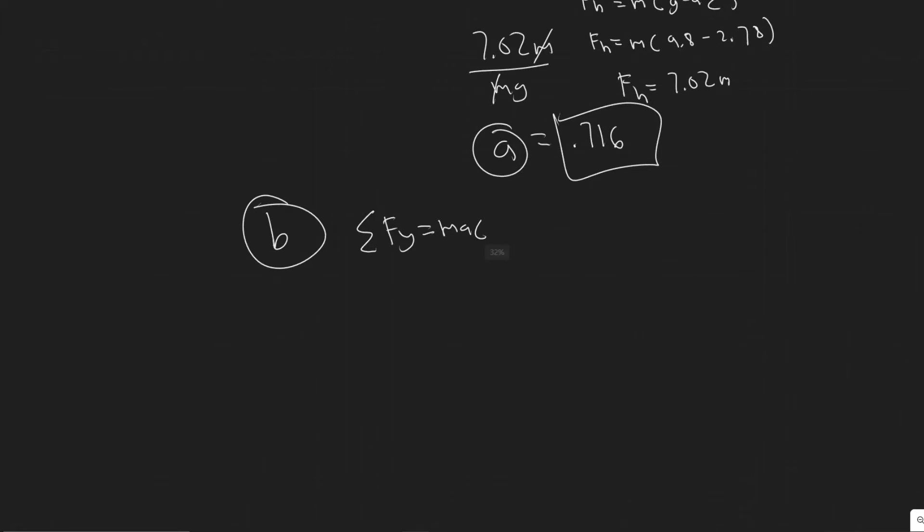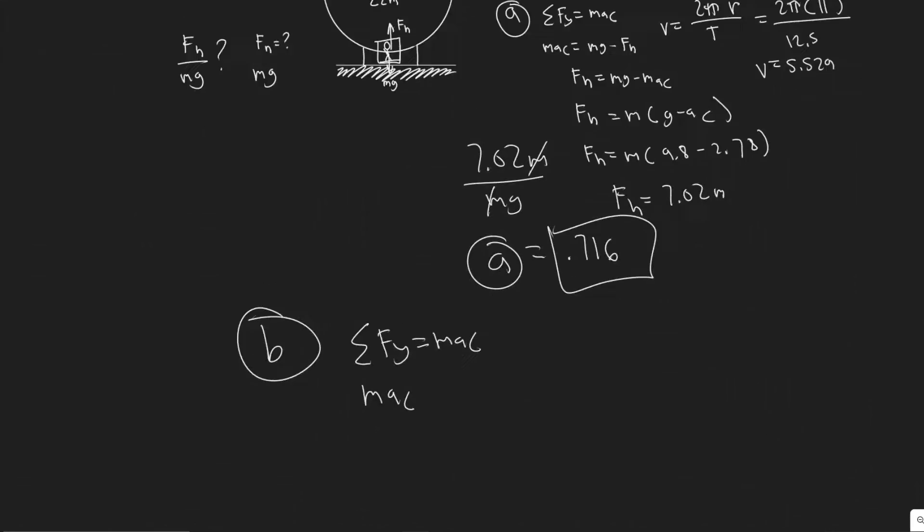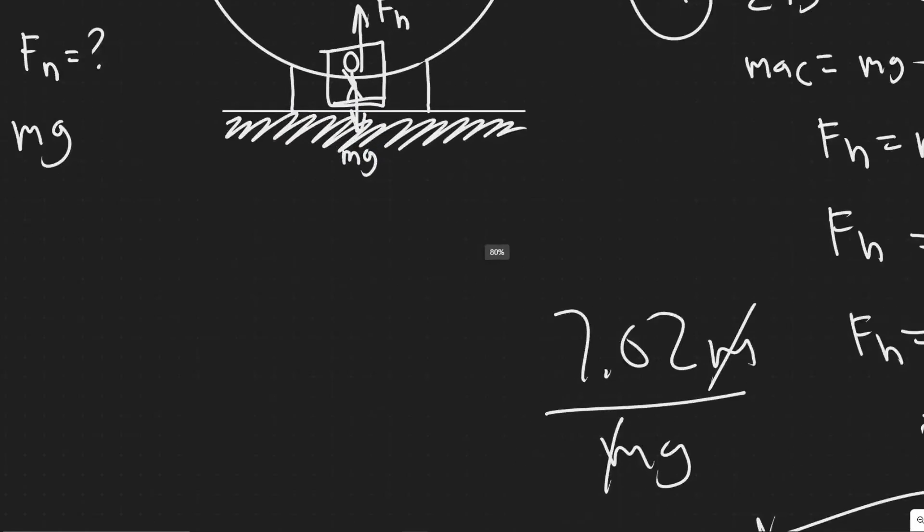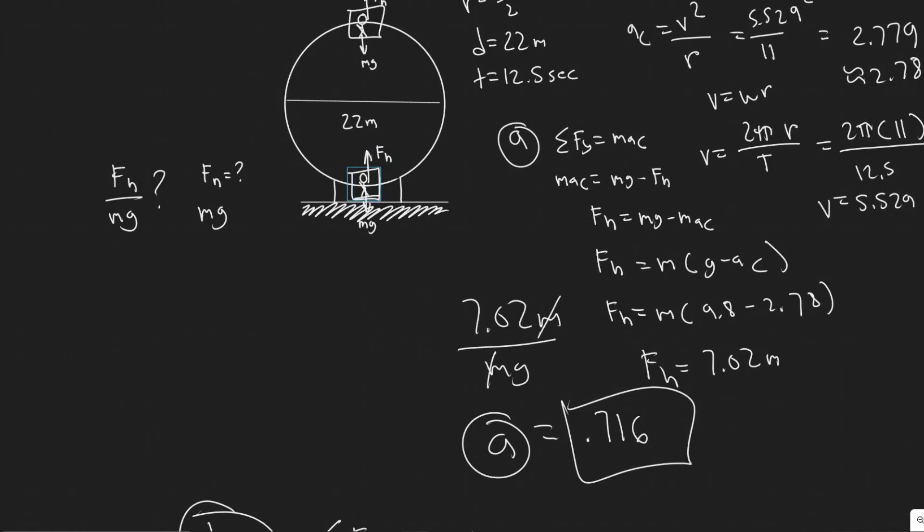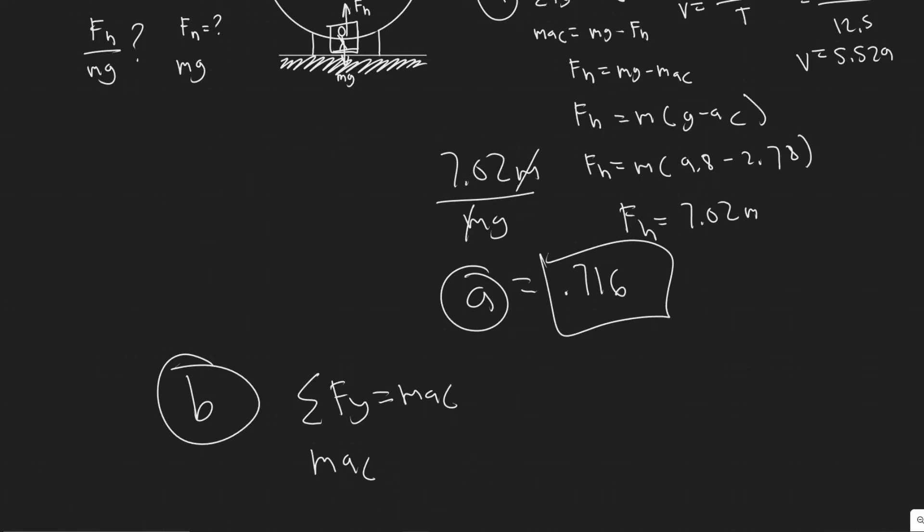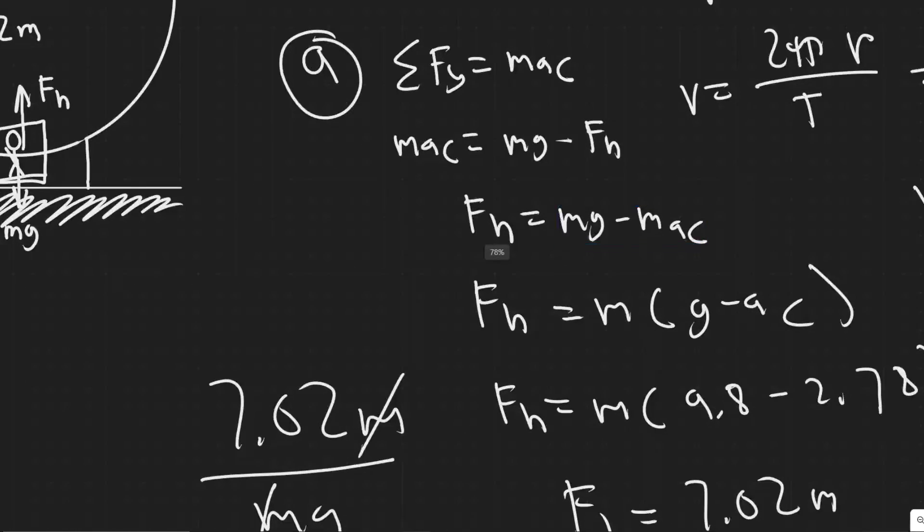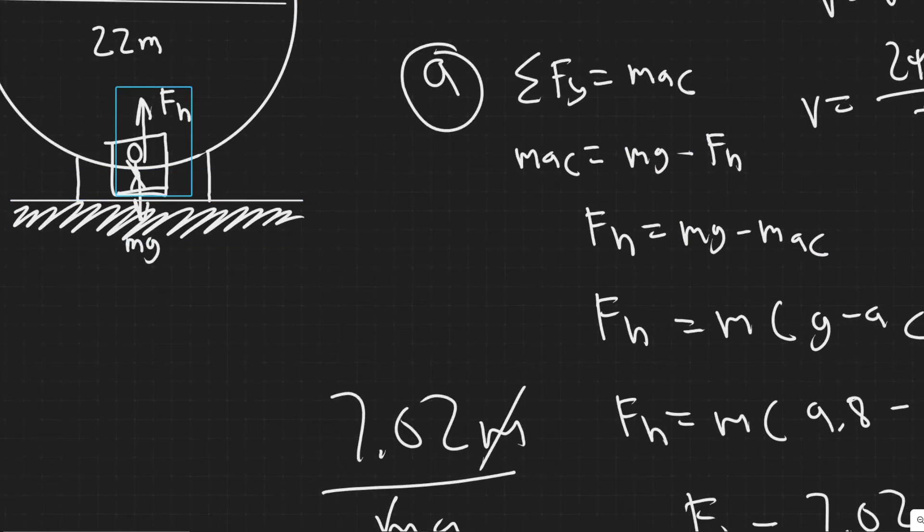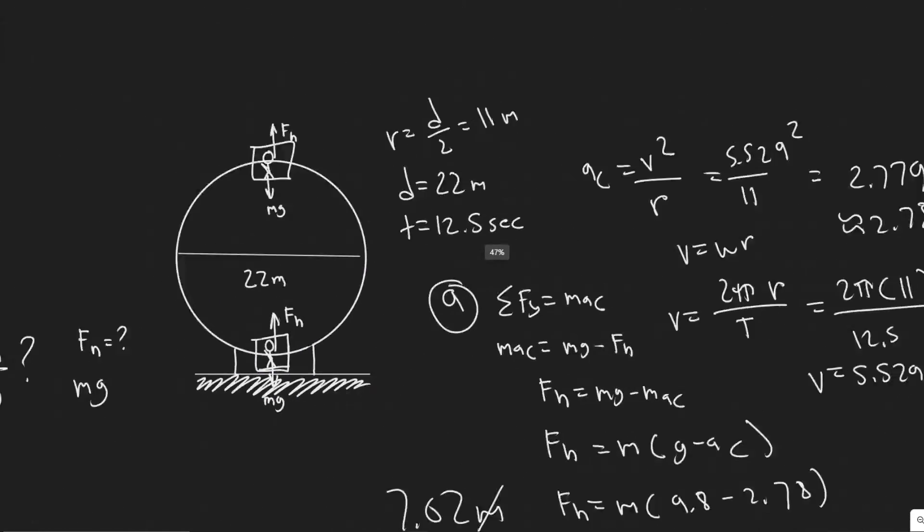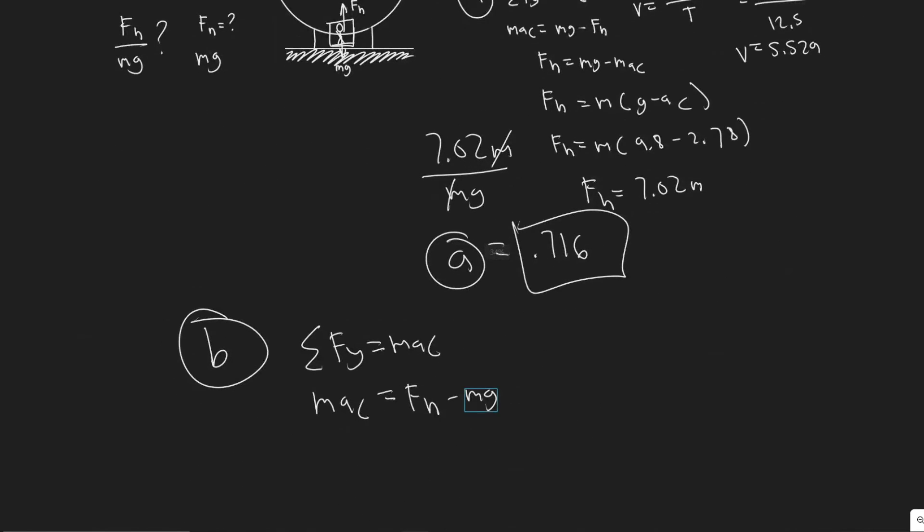But what changes here is the direction of the forces. So as I said before, F sub n, or if it points inwards, it's positive. So in this case, F sub n is positive, M G is negative. So in this case, it was the opposite because of the way they're pointing. But F sub n is positive minus M G because it's negative.